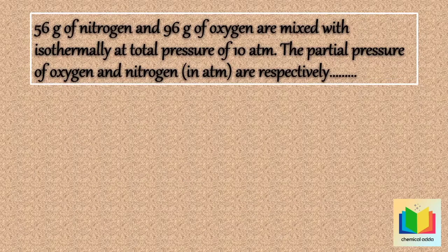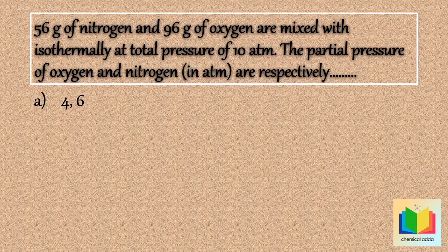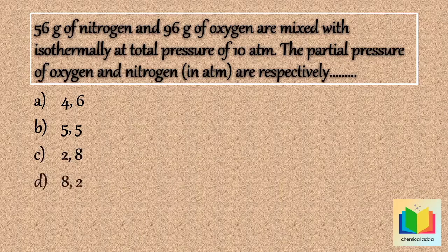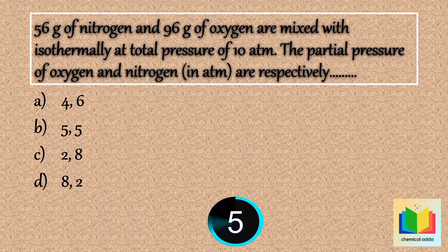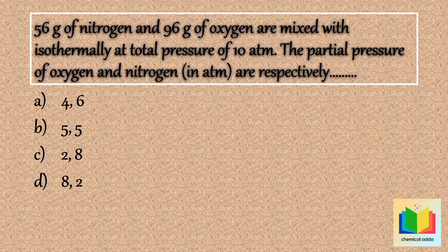Next question: 56 grams of nitrogen and 96 grams of oxygen are mixed isothermally at a total pressure of 10 atmospheres. The partial pressures of oxygen and nitrogen in atmospheres are respectively — option A: 4, 6; option B: 5, 5; option C: 2, 8; option D: 8, 2. The answer is option A: 4, 6.